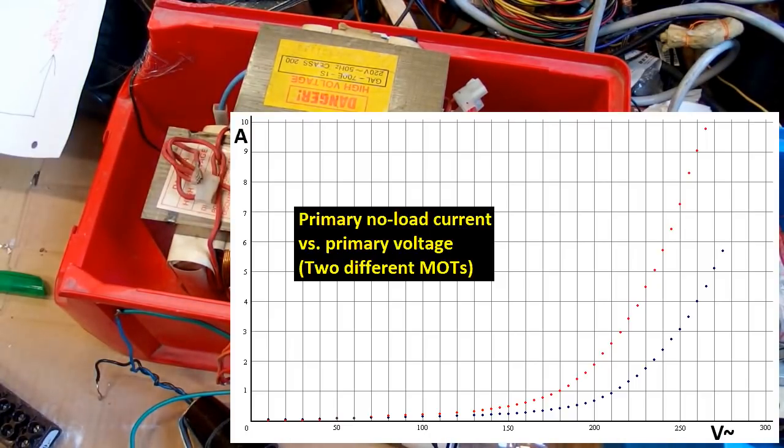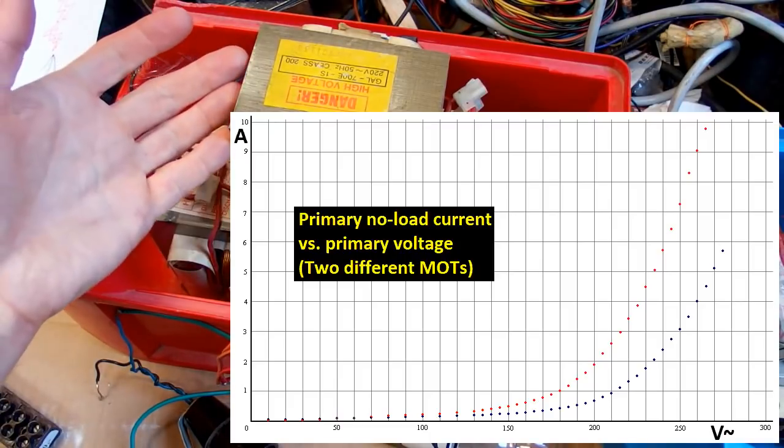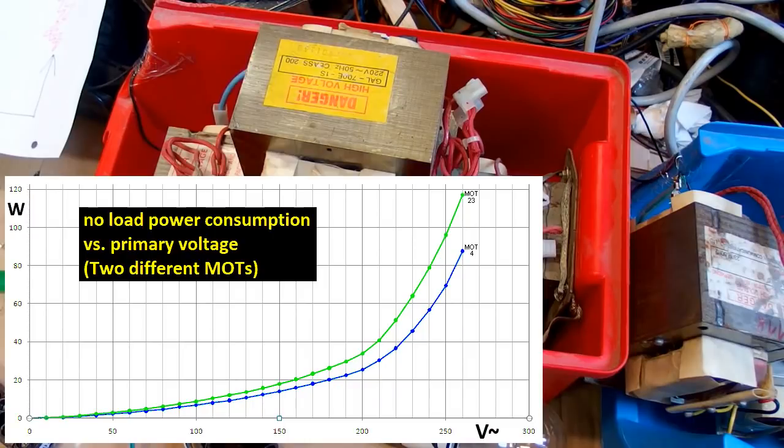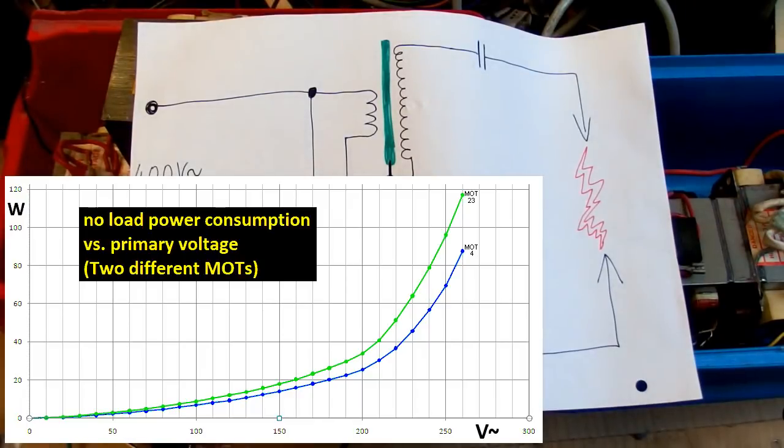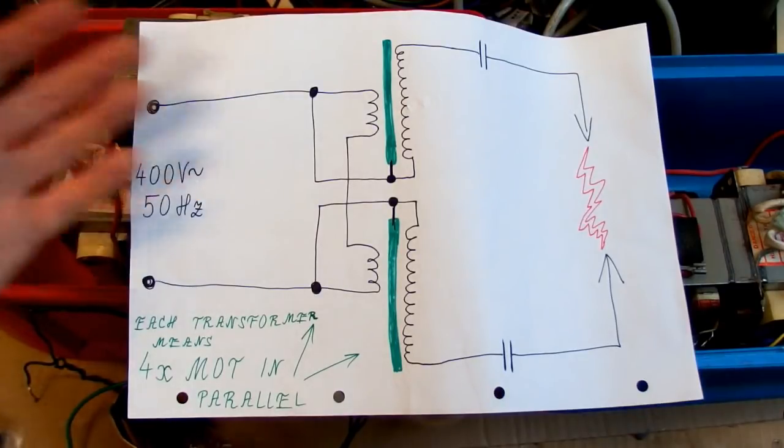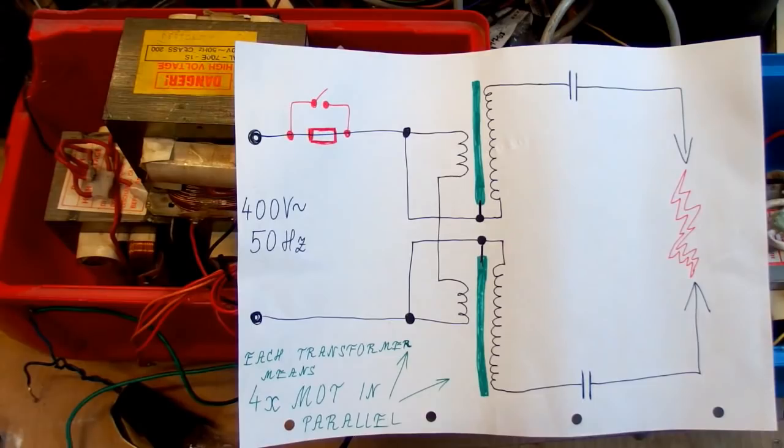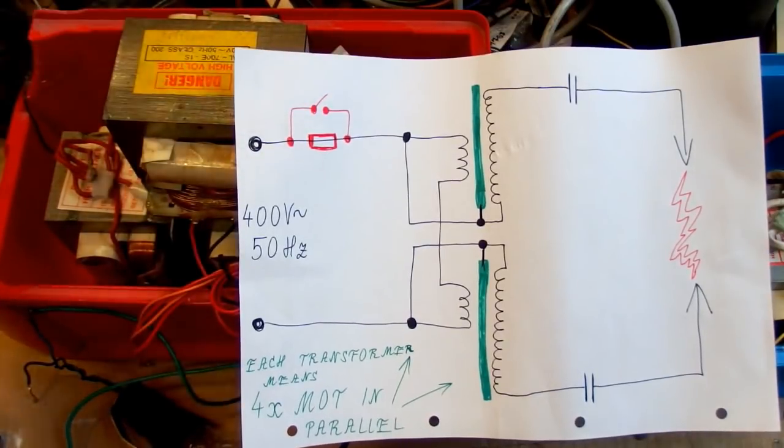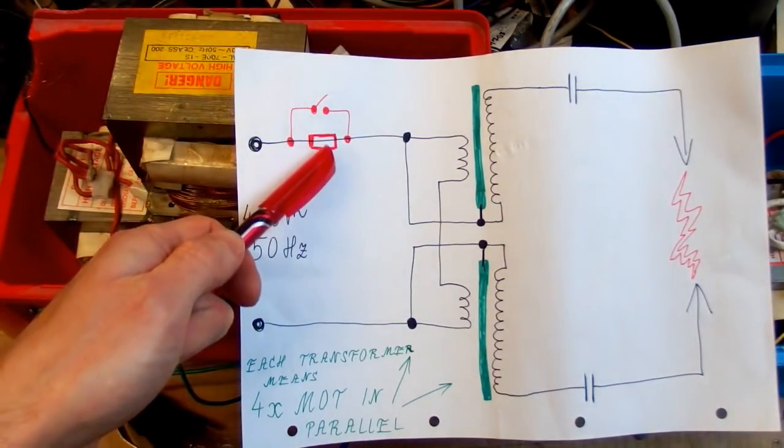Those transformers can draw about two or three amps at their nominal voltage even with no load. If you slightly reduce the input voltage, the input current with no load reduces very significantly. It also reduces the inrush current. Even though I still may have to put something to reduce the inrush current, for example a series resistor which I bypass using a switch after I power it up, or maybe an inductor here.